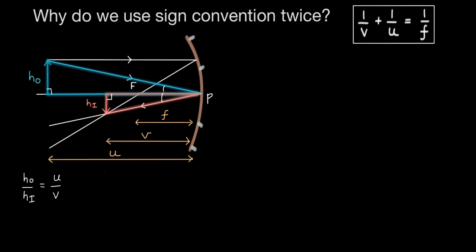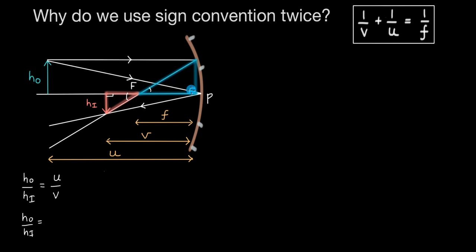We can pick one more pair of similar triangles. If we drop a perpendicular from this point on the optical axis, these two triangles will again be similar because we have 90 degrees and opposite angles which are equal. This side is just equal to H0. So H0 divided by HI equals the distance of the focus from the pole P. We can assume these two points are extremely close, so we take this distance as F. Therefore, H0 divided by HI equals F divided by V minus F.